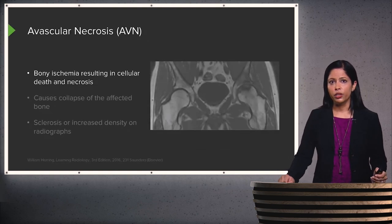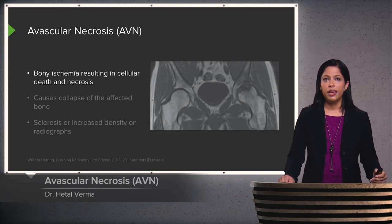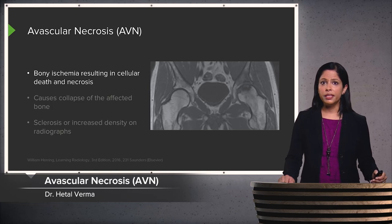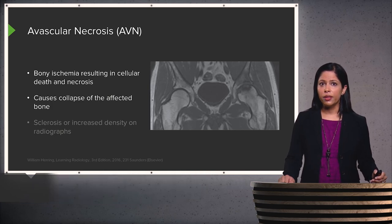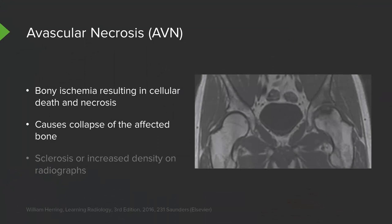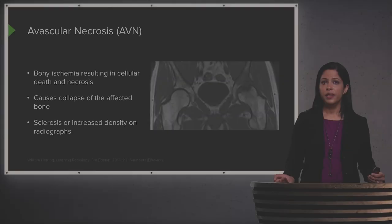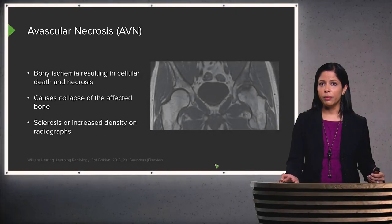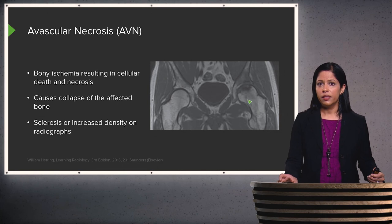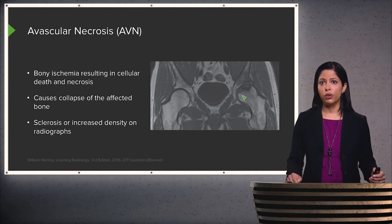Let's discuss avascular necrosis. Avascular necrosis is bony ischemia that results in cellular death and necrosis, causing collapse of the affected bone. Radiographs demonstrate an area of sclerosis or increased density. On this coronal MRI image, you can see the findings in the left femoral head — there's an area of hypointensity which reflects avascular necrosis.